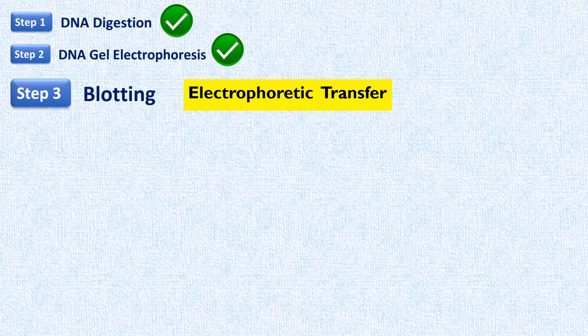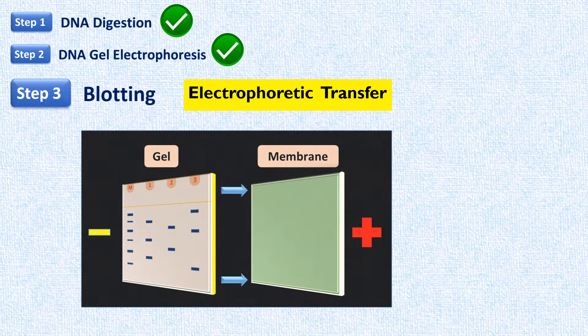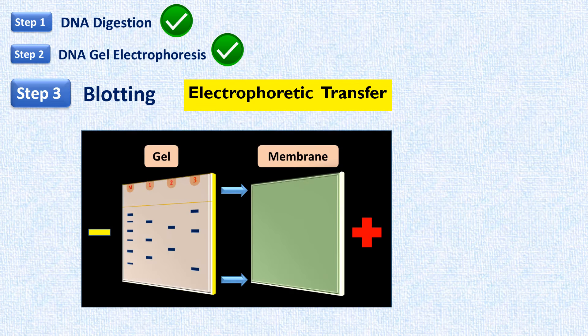Another method to transfer DNA is by using an electric field. This method is similar to the procedure for Western blotting, with the difference that here we are transferring negatively charged DNA molecules from the gel to the membrane instead of proteins.